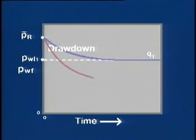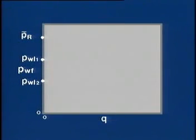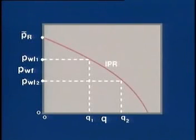If the flow rate is a higher value, say Q sub 2, the stabilized wellbore flowing pressure will drop to P sub WF2. By testing a well in this manner, it is possible to estimate and plot its bottom hole flowing pressure versus production rate for any given average reservoir pressure. We see such a curve with the two data points for our two flow rates here. This curve is called the inflow performance relationship or IPR curve.